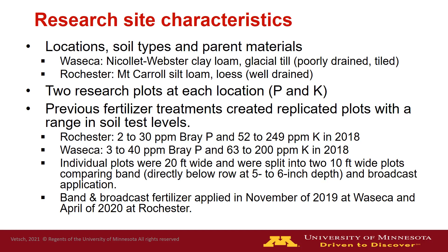At Rochester, the range was from 2 to 30 parts per million Bray P and 52 to 249 for ammonium acetate K, based on soil test samples taken in spring or summer of 2018. At Waseca, the range was from 3 to 40 parts per million Bray P and 63 to 200 K. The individual plots were 20 feet wide, split into two 10-foot plots comparing band on one side and broadcast on the other. The band is placed directly below the row, about five to six inches deep, just enough to avoid disturbance by one pass of spring pre-plant tillage.